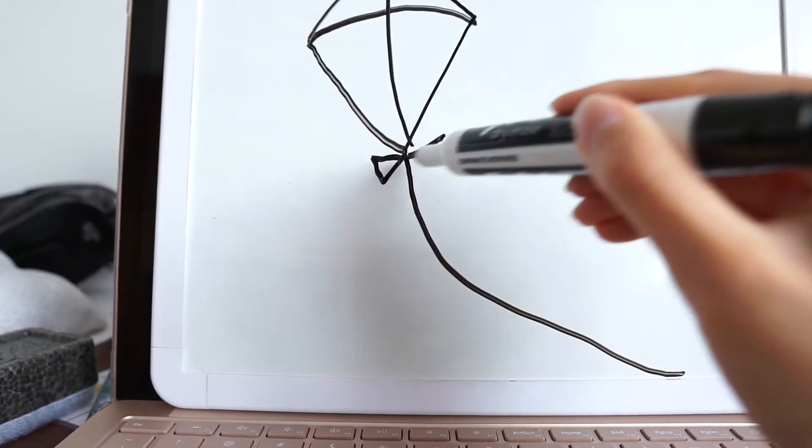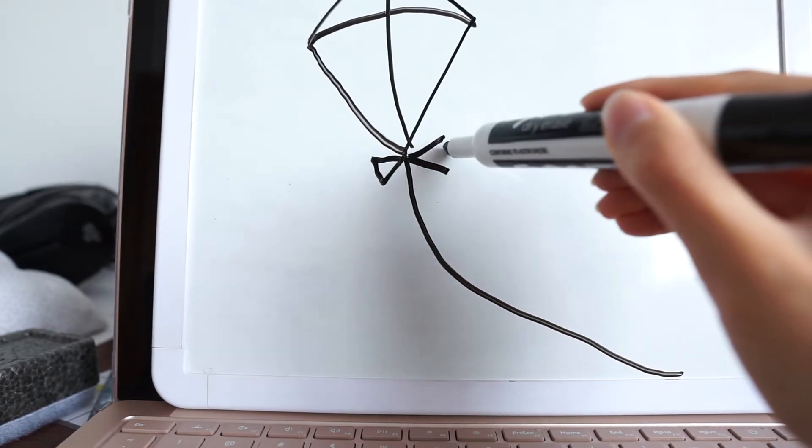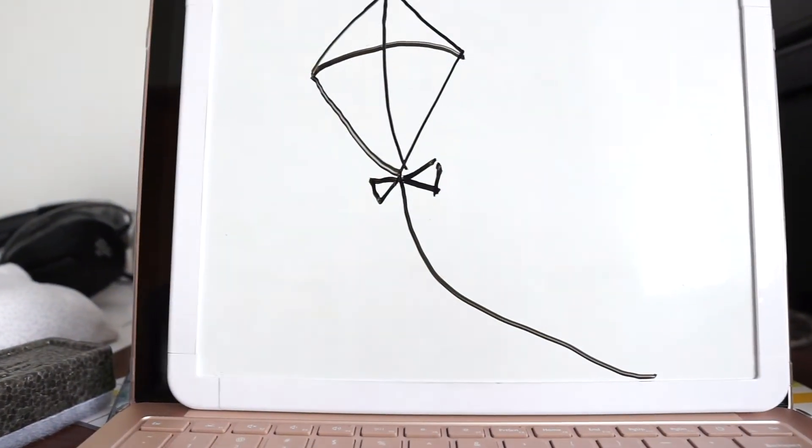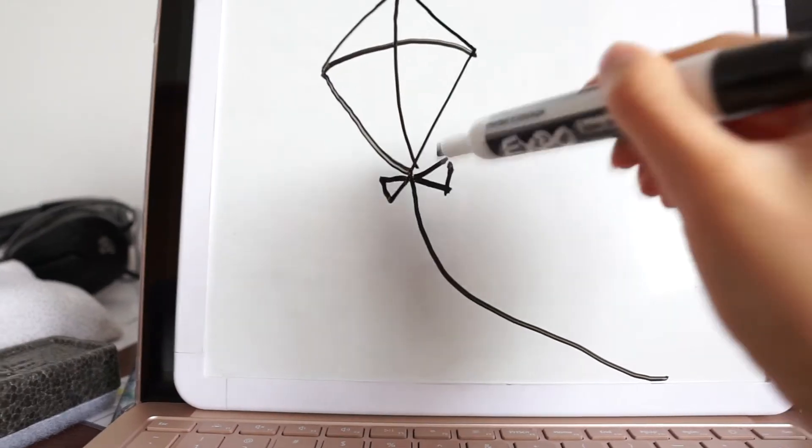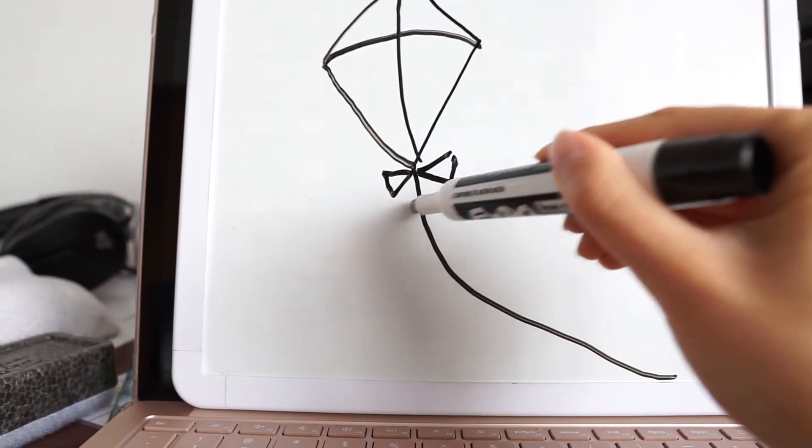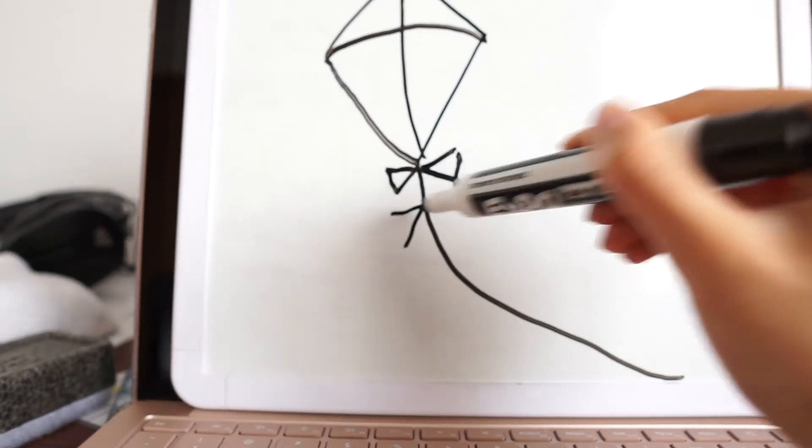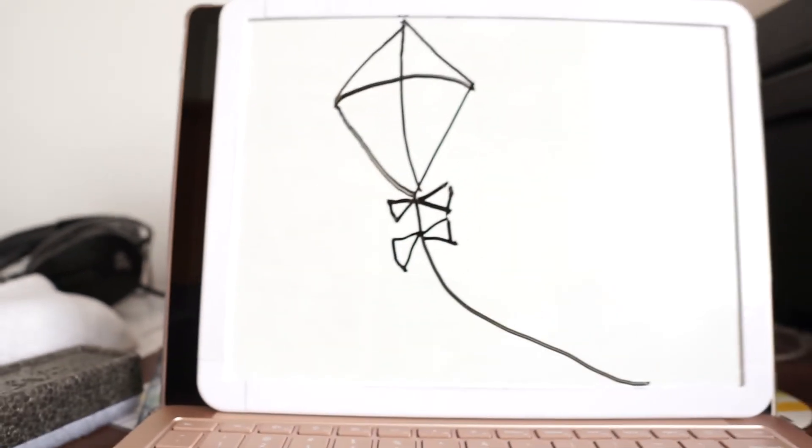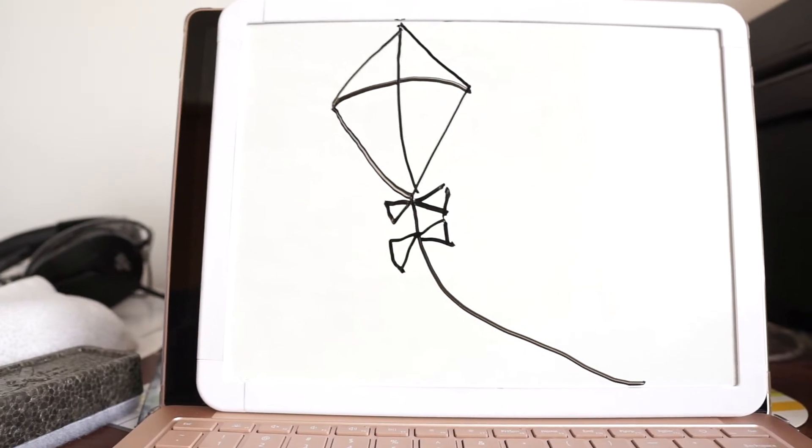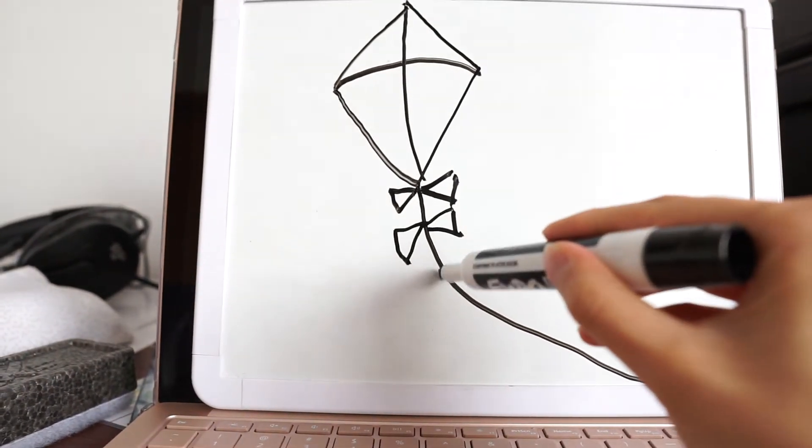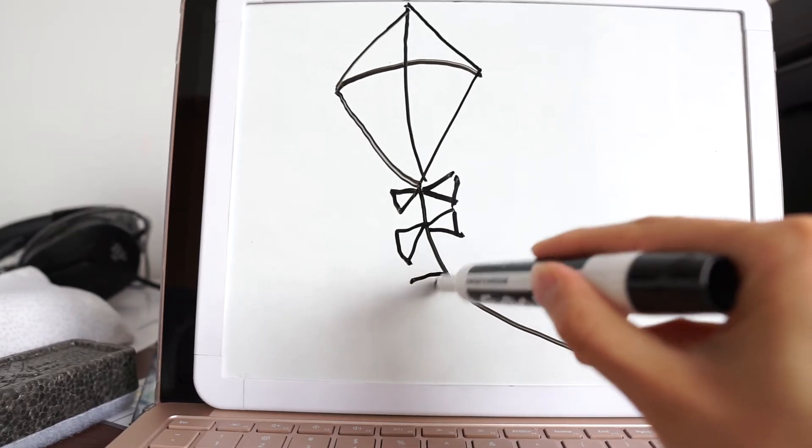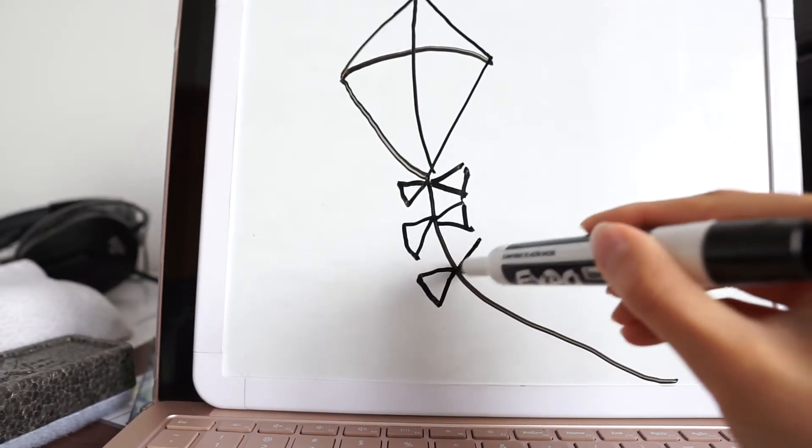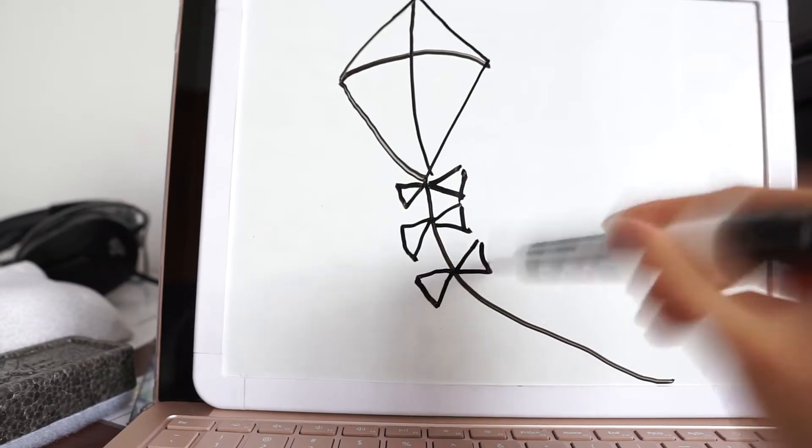We're going to draw three bows, so we need two more. So just on the bottom here, let's try another one: line out, line out, and connect it. Do the same thing on the other side, so we have two bows. And I'll do one more right under: line out, line out, connect, and on the other side, line out, line out, connect. So three bows on our kite.